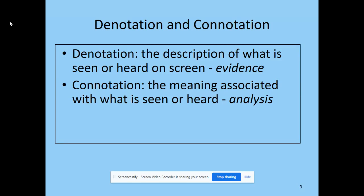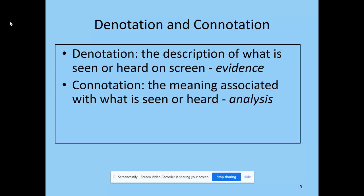So first up: denotation and connotation. We use these terms in media in order to explain and describe what's happening within a scene. The denotation is a description of what we are seeing or hearing on screen, and we have to mention some kind of technical aspect used in film. Next is connotation — you might have heard that word before in English — and it's the secondary meaning that we associate with something we're seeing or hearing, based on what we have seen and heard before.